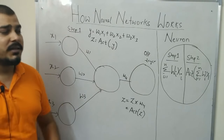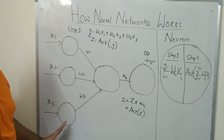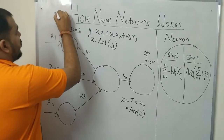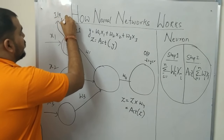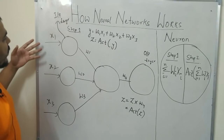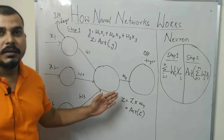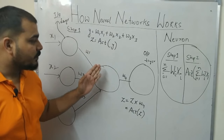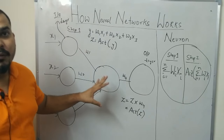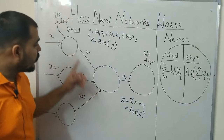I'm going to take the same example. Suppose I have features x1, x2, x3 from my input layer — this is my input layer. I am trying to solve a binary classification problem, and I have three features x1, x2, x3 that are getting passed to the hidden neuron present in hidden layer 1. This neuron does some processing, and we will understand what kind of processing it does.